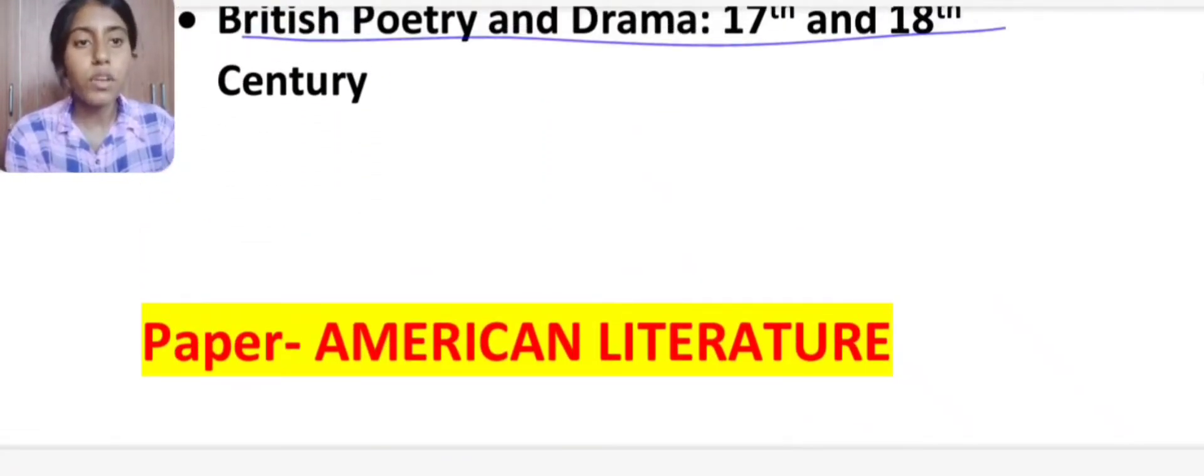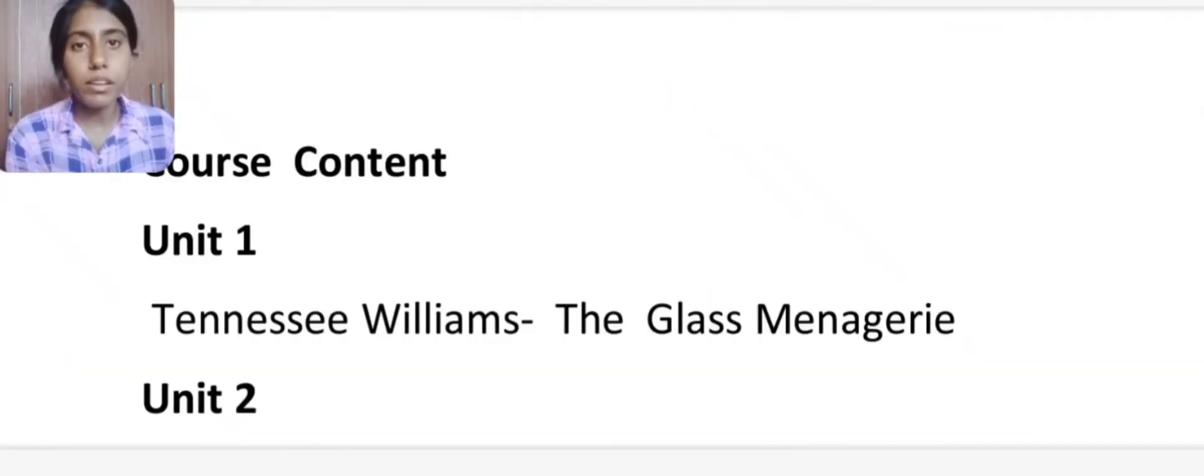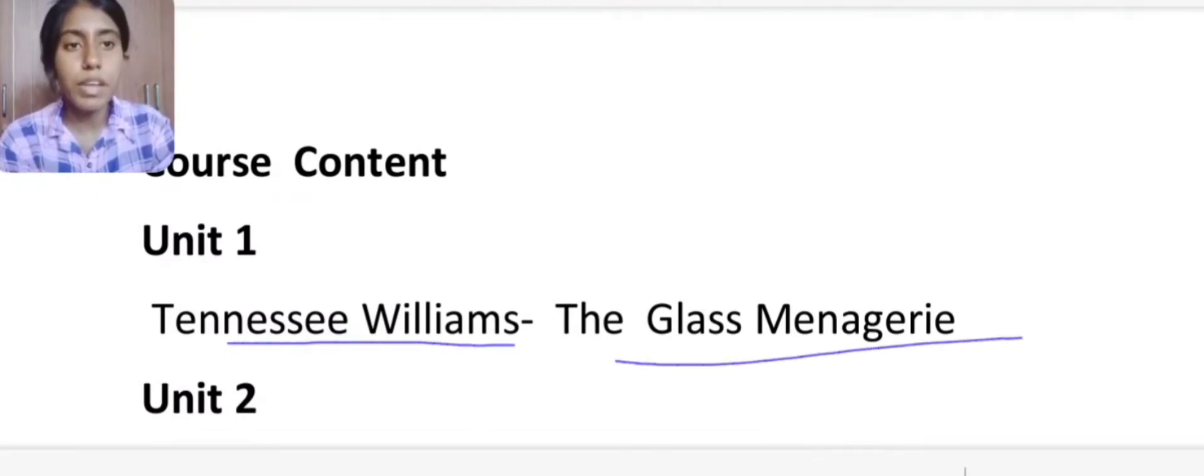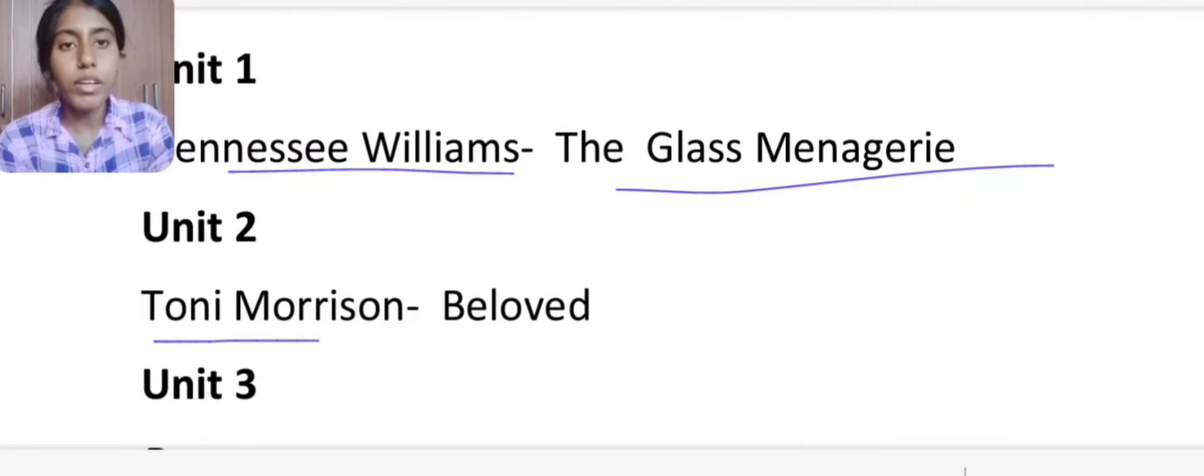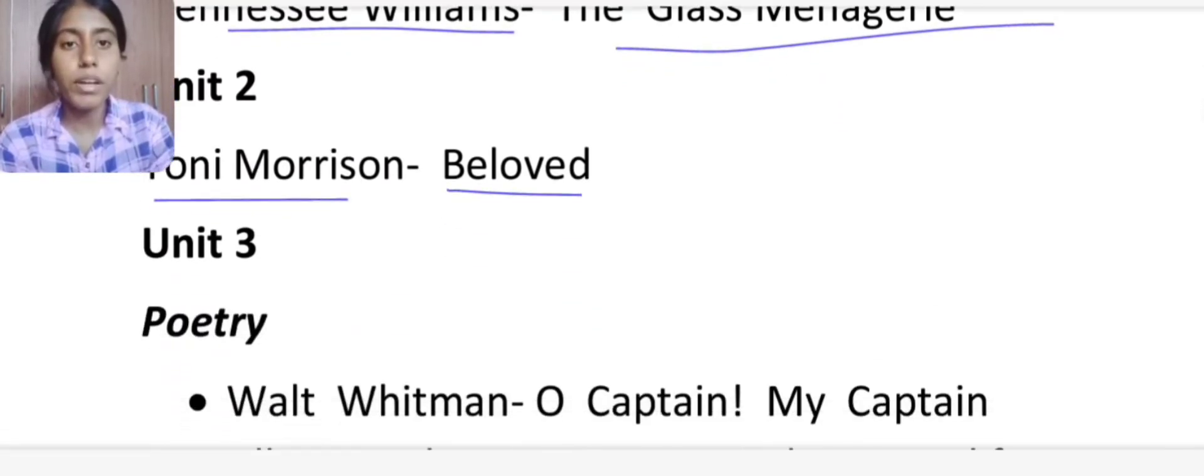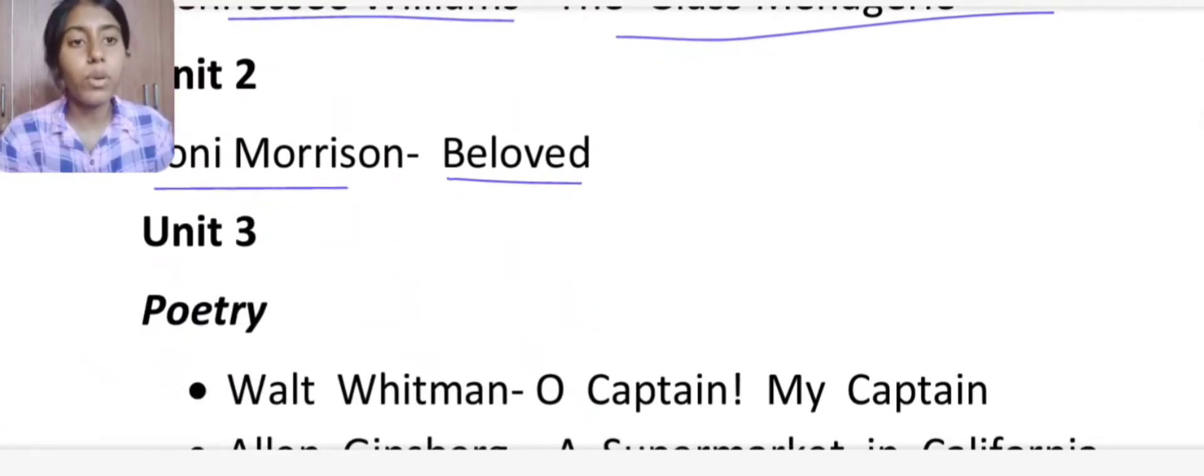So first of all we will discuss about the novels and syllabus of American Literature. So guys American Literature, your first book is Tennessee Williams' Glass Menagerie. Then Tony Morrison's Beloved. These novels you have to read under this paper.